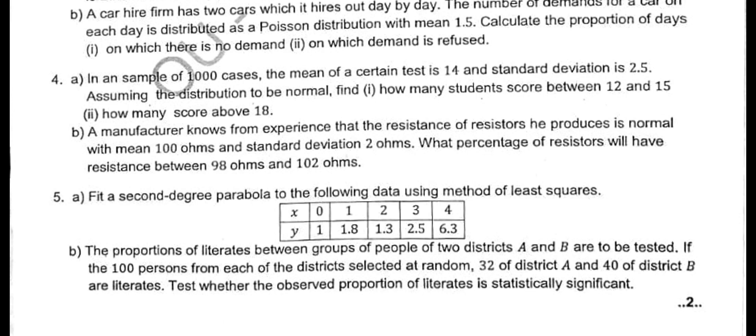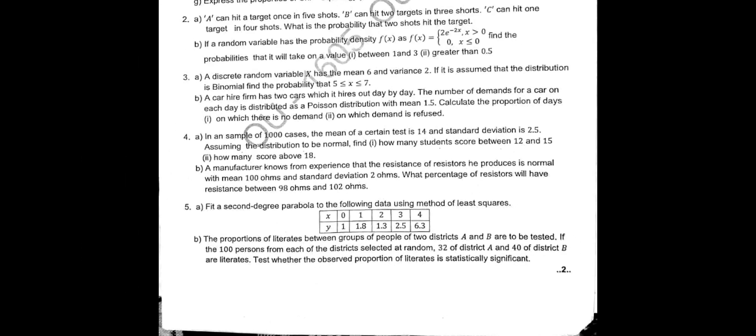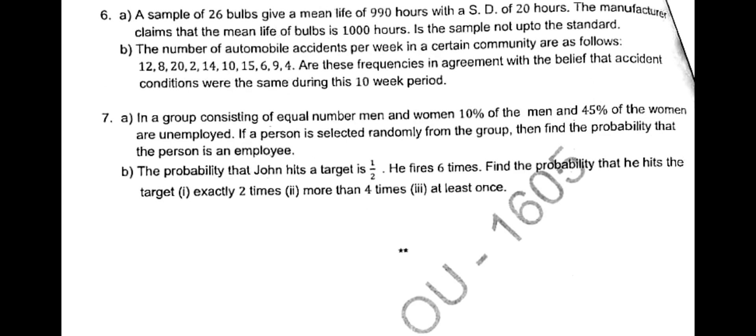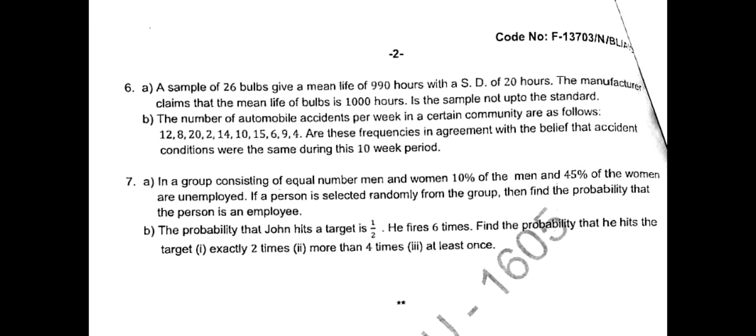The fourth A question is normal distribution and B bit is also normal distribution. Then fifth A bit is fitting a parabola from unit 4. Fifth B bit involves 2 samples A and B — we have to perform a test of significance for 2 means, from unit 4. Question 6 involves a small sample size of 26, that means unit 5, and B bit is chi-square distribution from unit 6.